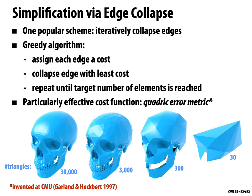The quadratic error metric applied to greedy edge collapse simplification gives excellent results. Starting with a high-resolution mesh of a skull, we can get down to 3,000 triangles — 10 times fewer — and it still looks pretty good. Going down another factor of 10 to 300 triangles still looks quite good. Only at 30 triangles do we really lose track of what the shape looks like. A simple greedy heuristic can do a really good job of simplifying geometry.